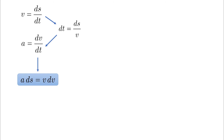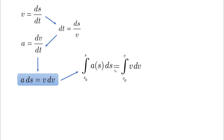This equation can be used in two different ways. The first and most common way is when we have a as a function of s. In this situation, the equation is integrated with respect to s. A simple example will be a question that has a(s) given with s and v as boundary conditions.